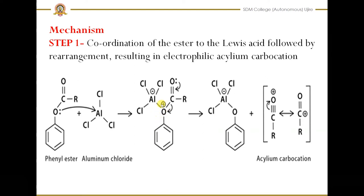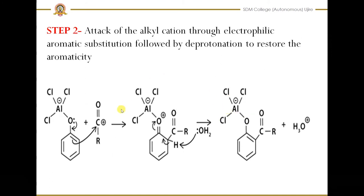Since the oxygen gets a positive charge, the structure becomes unstable. As a result, the C–O bond breaks, the bonded electrons return to the oxygen, and the acyl group separates as an acylium carbocation. So in this first step, a bond forms between the phenyl ester and anhydrous aluminum chloride; due to instability, the C–O bond breaks and we get the acylium carbocation.